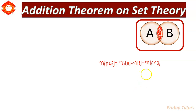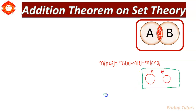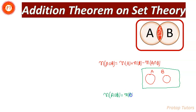Suppose that these two sets are disjoint sets, then what is the value of n(A∪B)? In this case n(A∪B) is equal to n(A) plus n(B), because there is no common area between them. So simply this is equal to n(A) plus n(B).